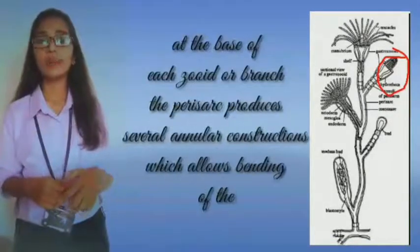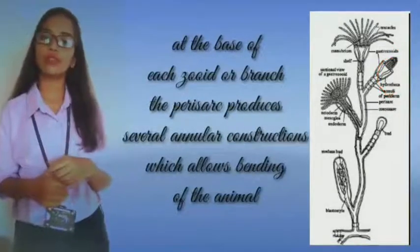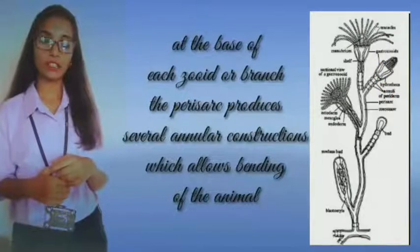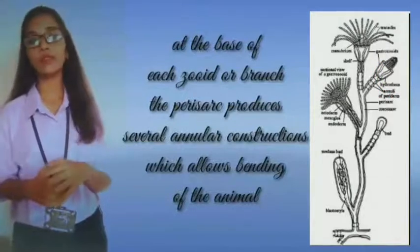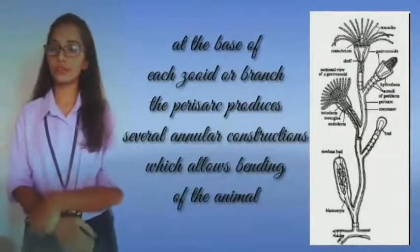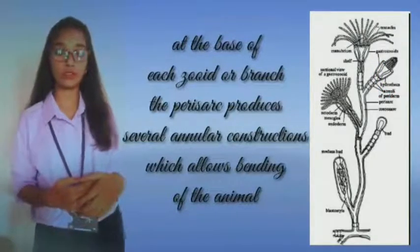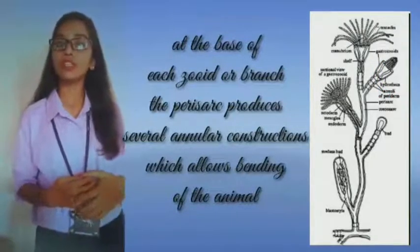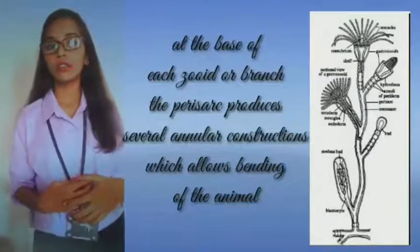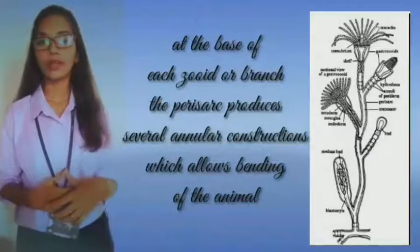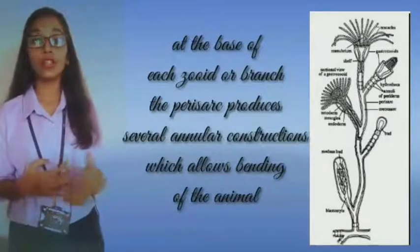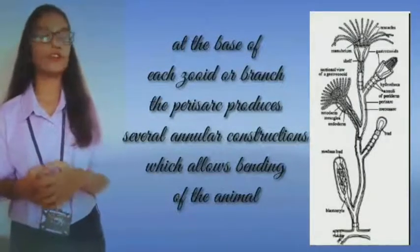At the base of each zoid or branch, the Perisarch produces several annular constrictions which give it a ringed appearance, and which allow bending of the animal.